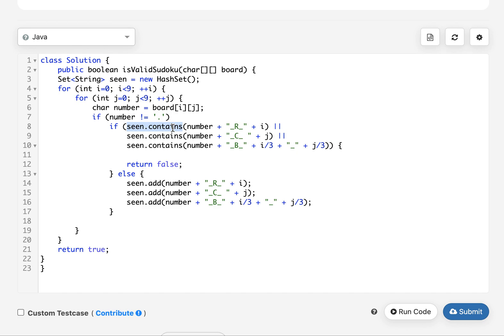If that is the case, I'll check whether the entry corresponding to row, column, or box exists in this set. If it does, I'll return false. Otherwise I'll go and add a new entry in the set corresponding to the row key that we built, the column key that we built, and the box key that we built. Pretty straightforward. In the end, if this condition is not met, we simply return true as an answer.